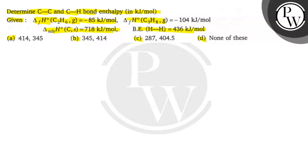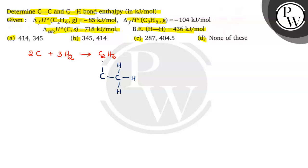First of all, we need to write the equation: carbon combines with 3 moles of hydrogen and forms C2H6, ethane. Here we are going to find out the CC and CH bonds. Let us see the structure of ethane — a CC single bond, and each carbon is connected to 4 bonds, as carbon has a valency of 4. This is the ethane structure.